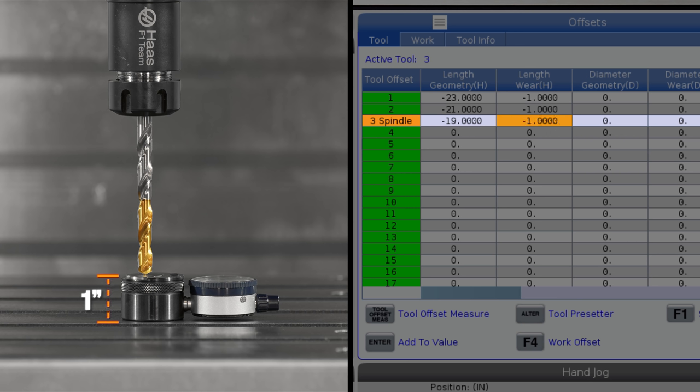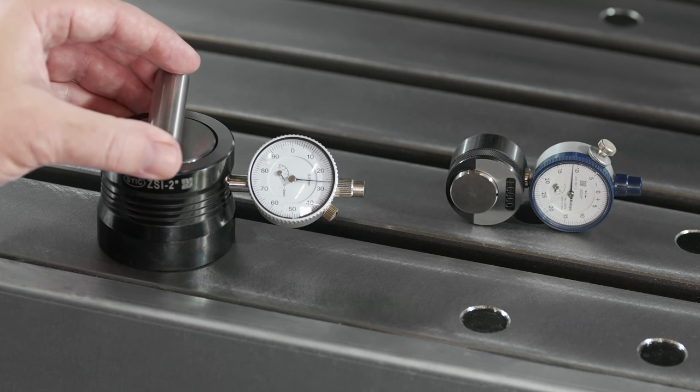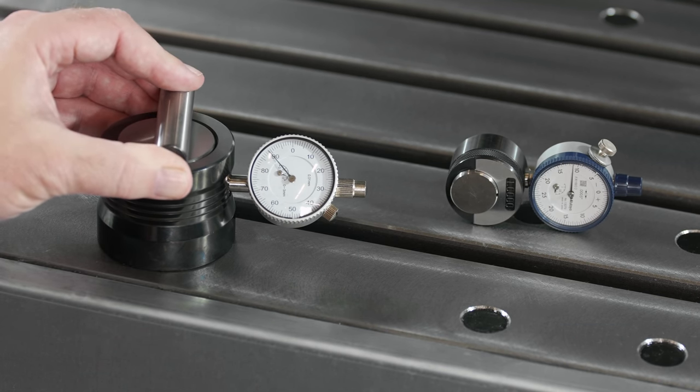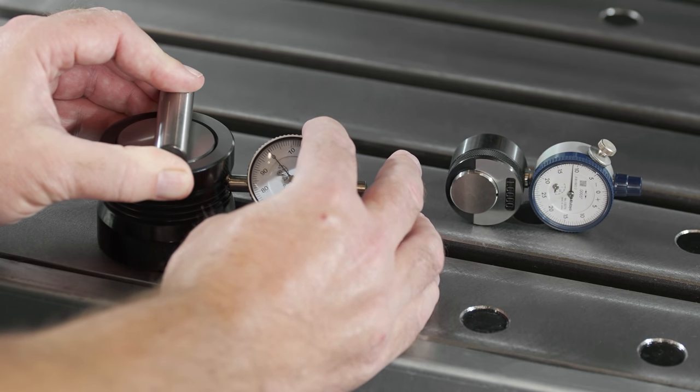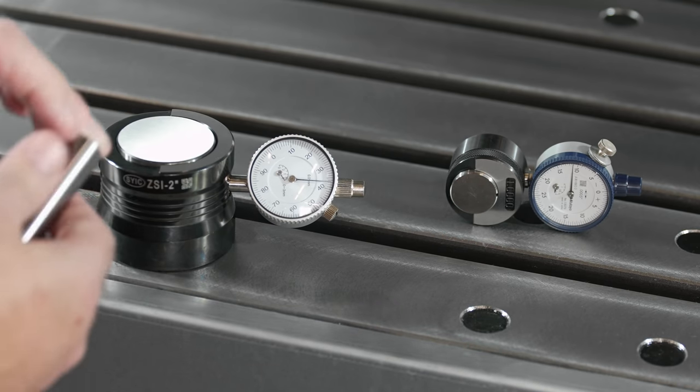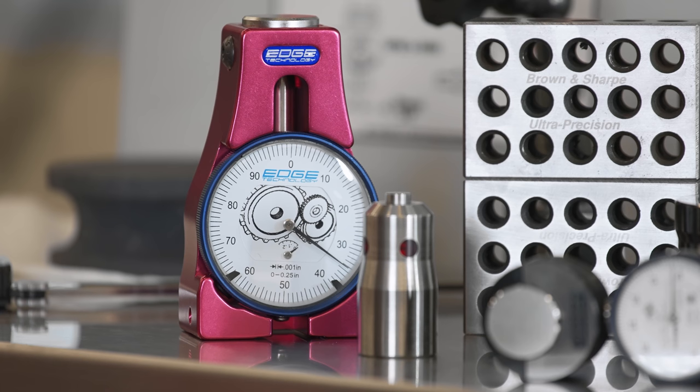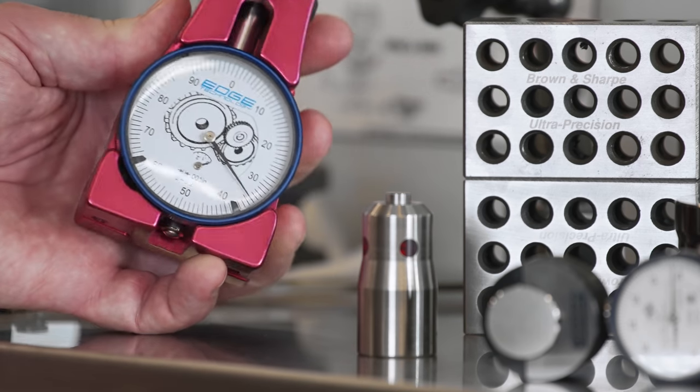These precision height gauges can be calibrated just by rolling a gauge pin across the ground faces while zeroing out our dial indicator.